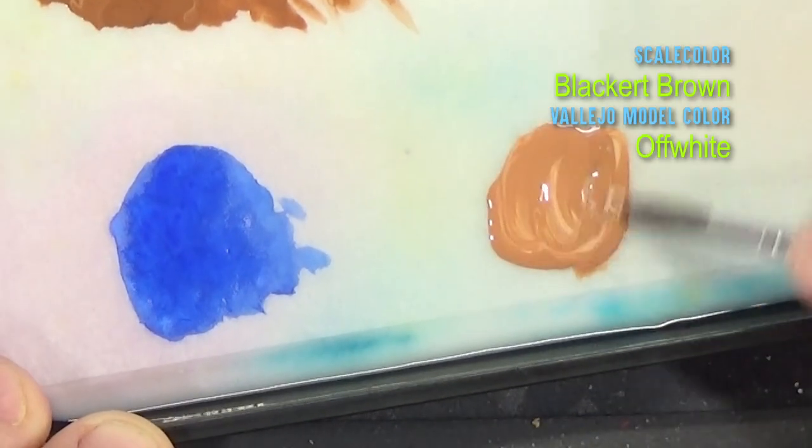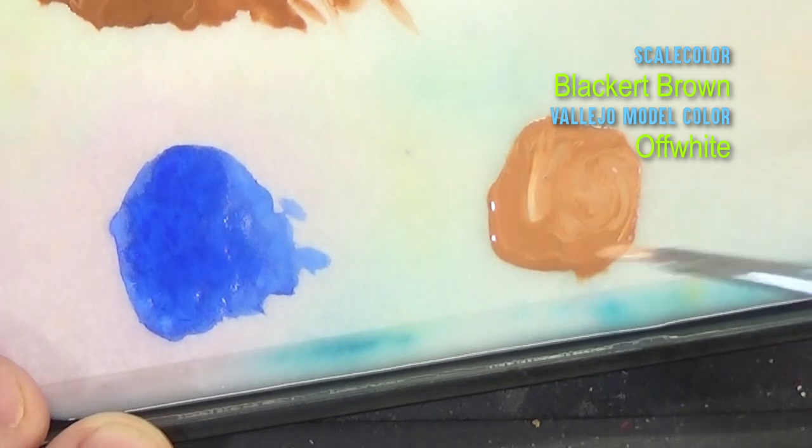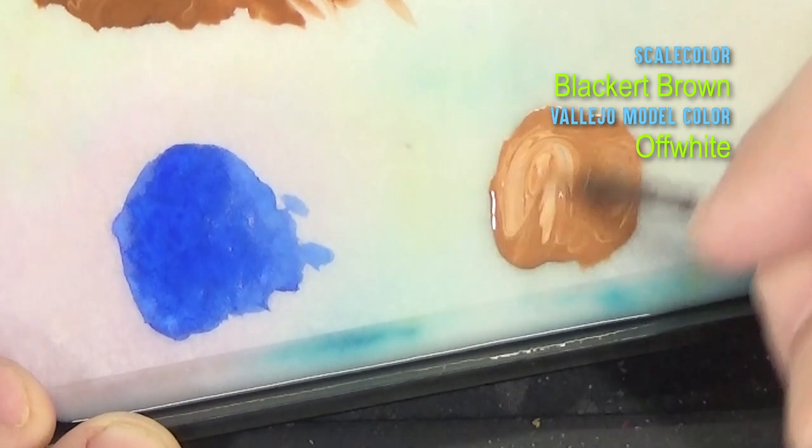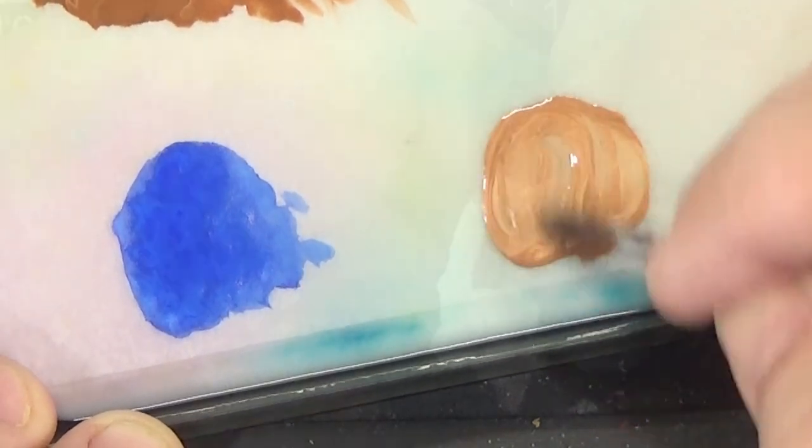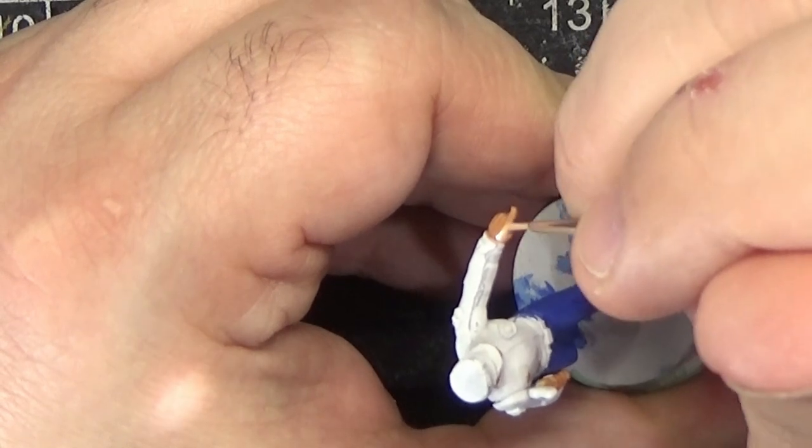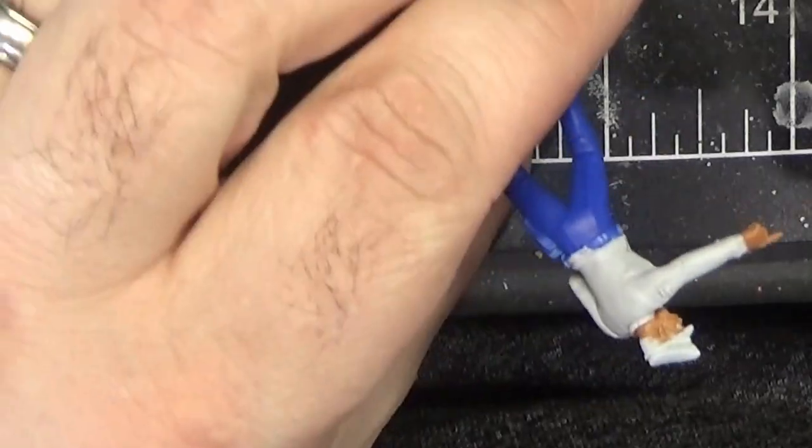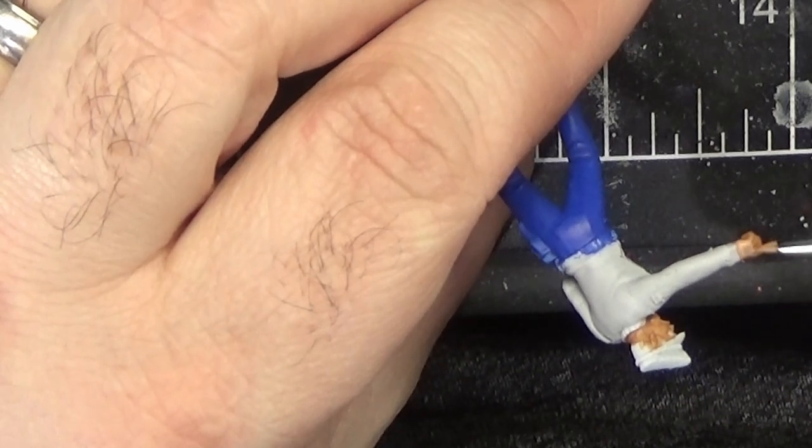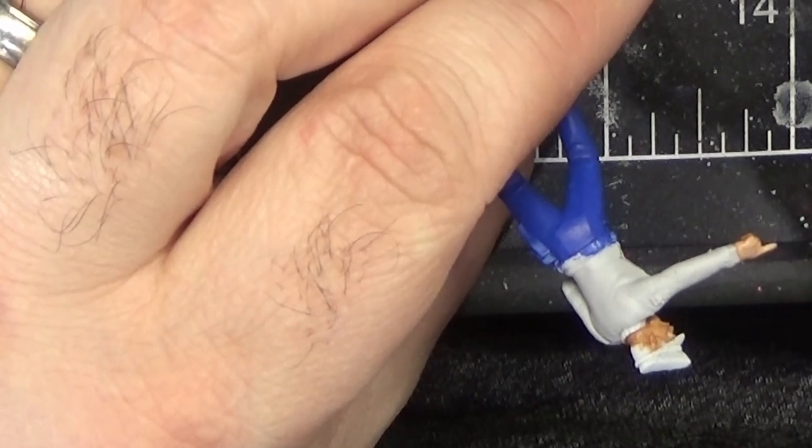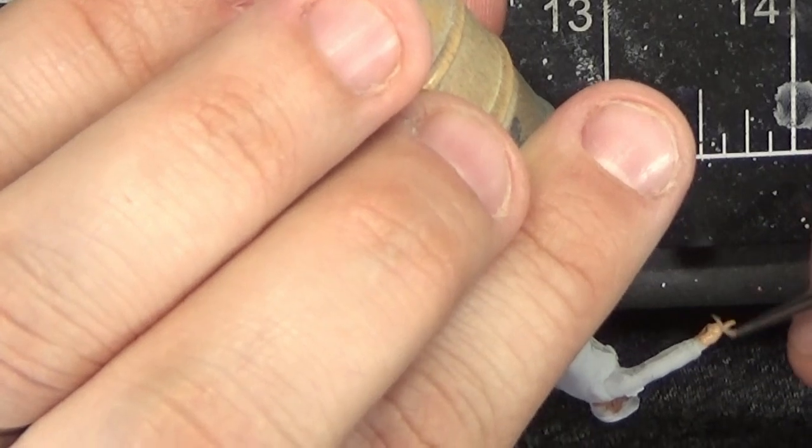Now for the lighter skin cops, I'm mixing a little bit of off-white into the Black or Brown. You can see that the skin is already painted on this miniature. I had actually used pure Black or Brown originally, but I felt like the color was too dark for what I was going for, so now I'm redoing it with the mix.